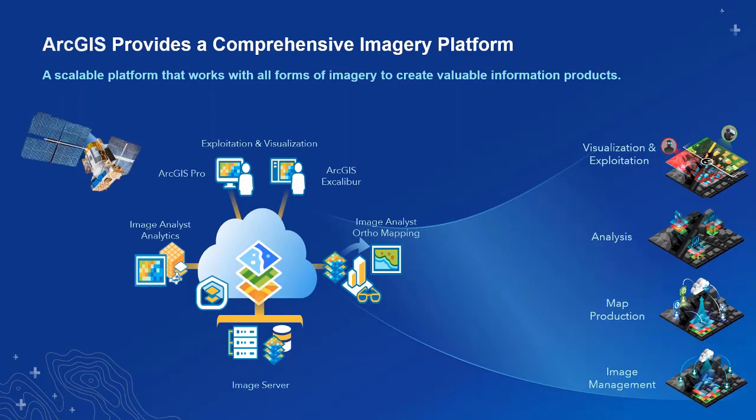We accomplish this through five key components. Starting from the bottom up: first, imagery management capability managed by our imagery server, which hosts massive amounts of imagery and disseminates data through services. Next, for map production, we have products like Drone2Map for creating map data and digital elevation models from imagery. Next is ArcGIS Pro for analysis, using the image analyst extension for deep extraction of information. And at the top is visualization exploitation — that's where Excalibur comes in, utilizing all types of imagery for quickly searching, discovering, annotating, and disseminating products to decision makers.